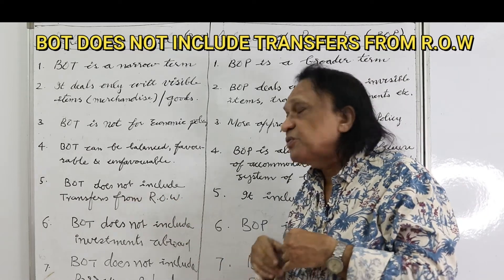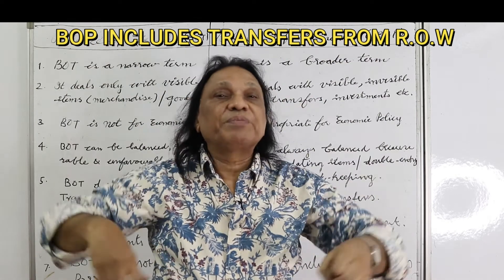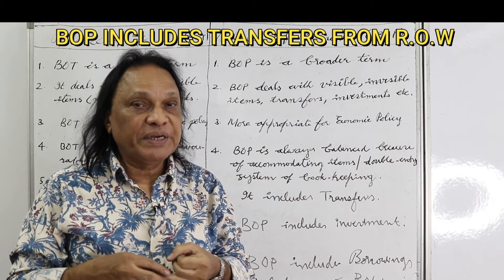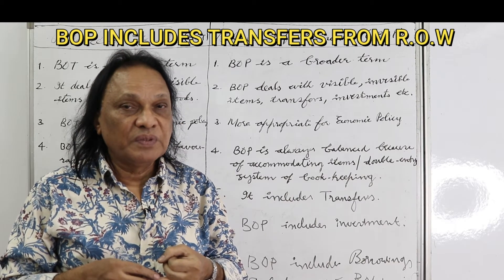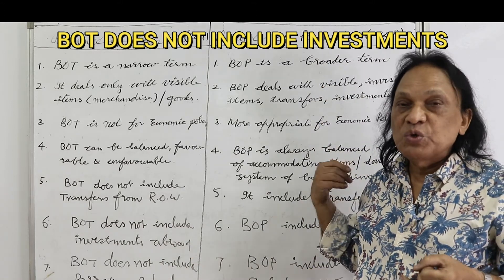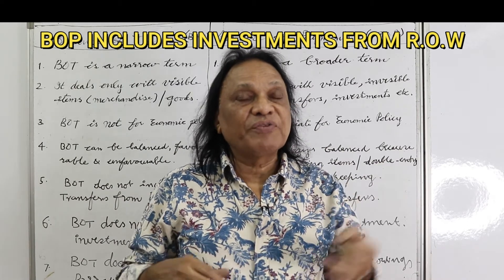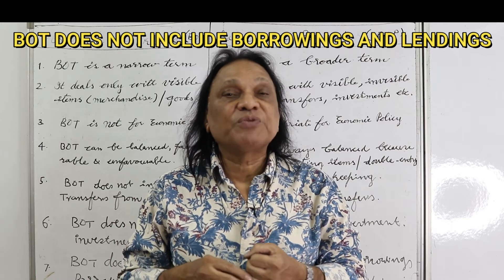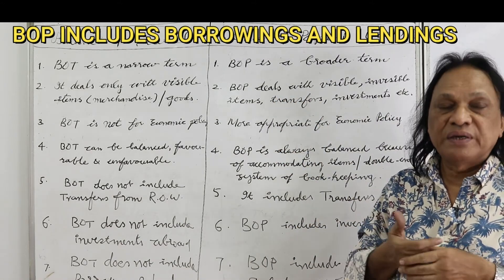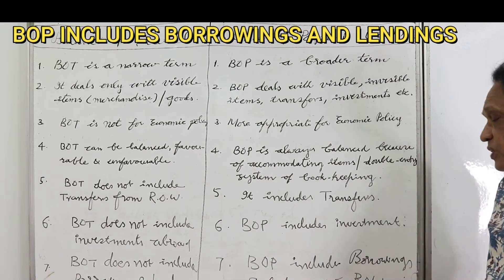BOT does not include transfer payments from the rest of the world. Transfer payments can be gifts and remittances that the country is getting from other countries — we also give remittances and gifts to other countries. In BOT, we do not include those transactions. BOP includes remittances from abroad and transfers from the rest of the world. BOT does not include investments from abroad, but BOP includes them — our companies investing in other countries, and foreign companies investing in our country. BOT also does not include borrowings and lendings, whereas BOP includes all borrowings and lendings with the rest of the world.